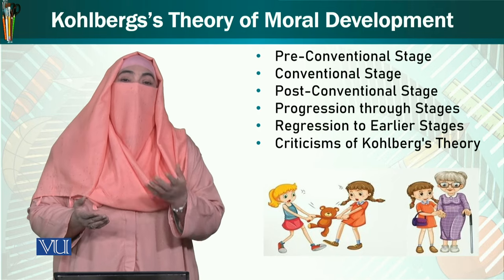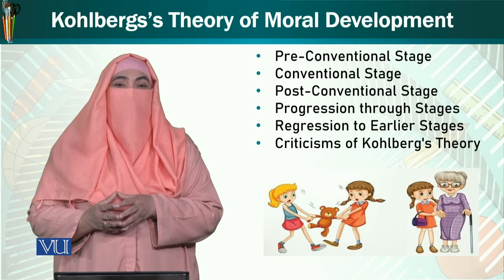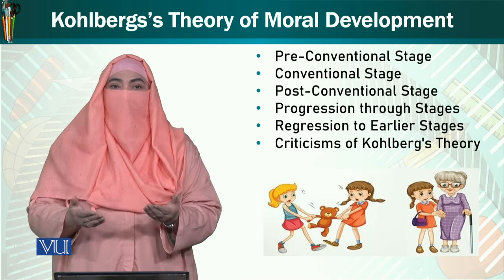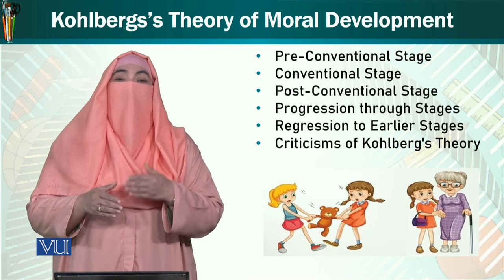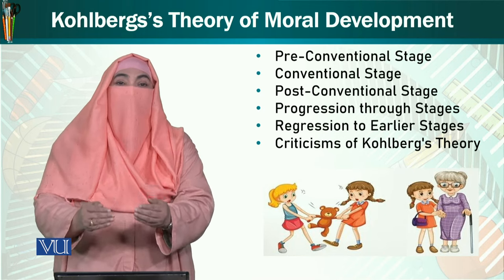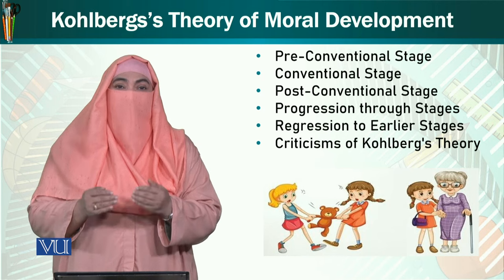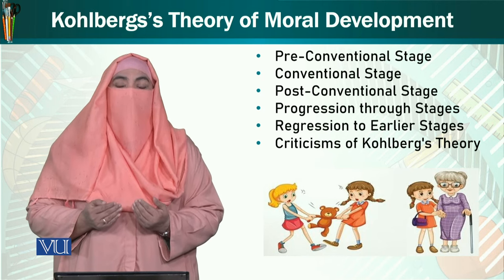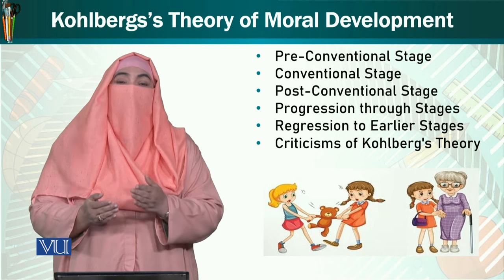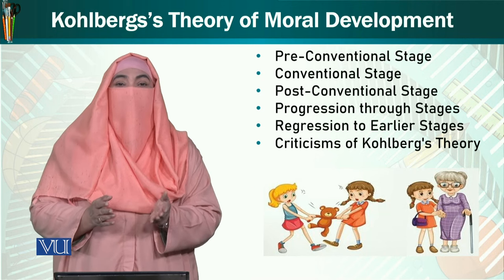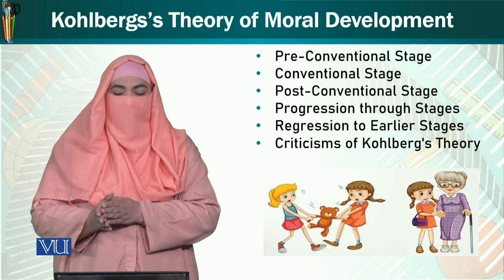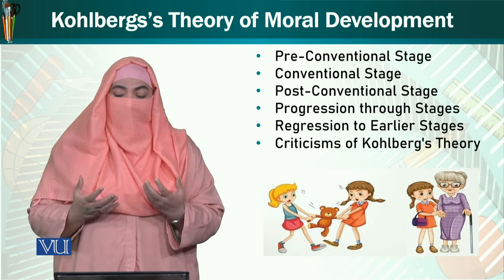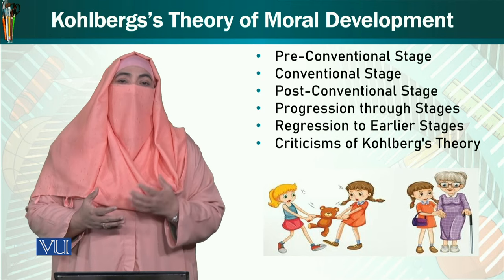دوسری pre-conventional stage کو instrumental stage کہتے ہیں — جیسے 'do good and have good'. بچے شروع سے ہی یہ سیکھ جاتے ہیں کہ اگر ہم کسی کا بھلا کریں گے تو وہ بھی بدلے میں ہمارے ساتھ بھلائی کرے گا. تو وہ ساری اچھی باتیں سیکھتے ہیں جن سے ان کو اچھے نتائج ملنے والے ہیں۔